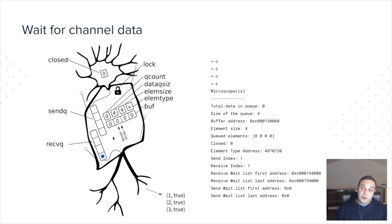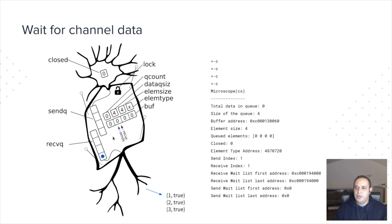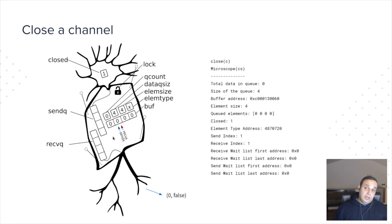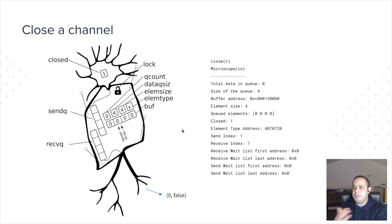Then another goroutine wants to read from the channel, but the channel is empty. So it parks itself in the receive wait queue, pauses itself, and lets the Go runtime take another goroutine. If I close the channel, that goroutine that was waiting is going to receive the closed message, the closed flag is set to one, and everything behaves as expected. The channel is no longer usable.